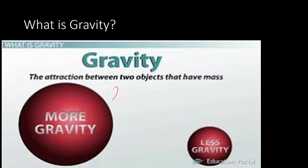Earth has a gravitational acceleration rate of 9.81 meters per second squared. But if we take a look at the moon, the moon has a gravitational acceleration rate of 1.66 meters per second squared. So the larger the object, the more mass it has and the more gravitational force it has. The smaller the object, the less gravity and the less gravitational force it has.